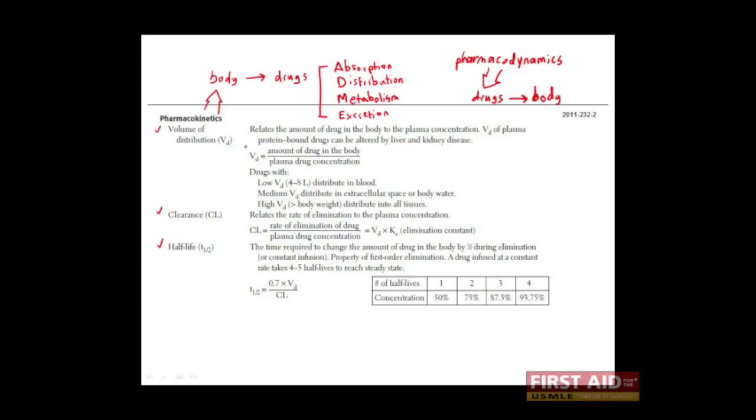To start, the volume of distribution is given by the equation: amount of drug in the body over the plasma drug concentration. Realize that the amount of drug in the body is given in units of mass, for example, milligrams. Plasma drug concentration, on the other hand, is a concentration. That is, it is given in the units mass over volume.